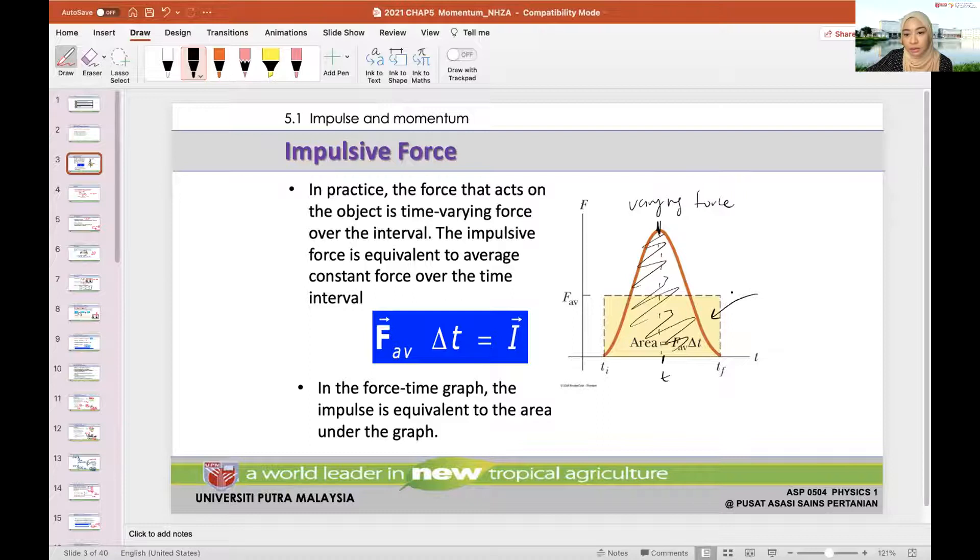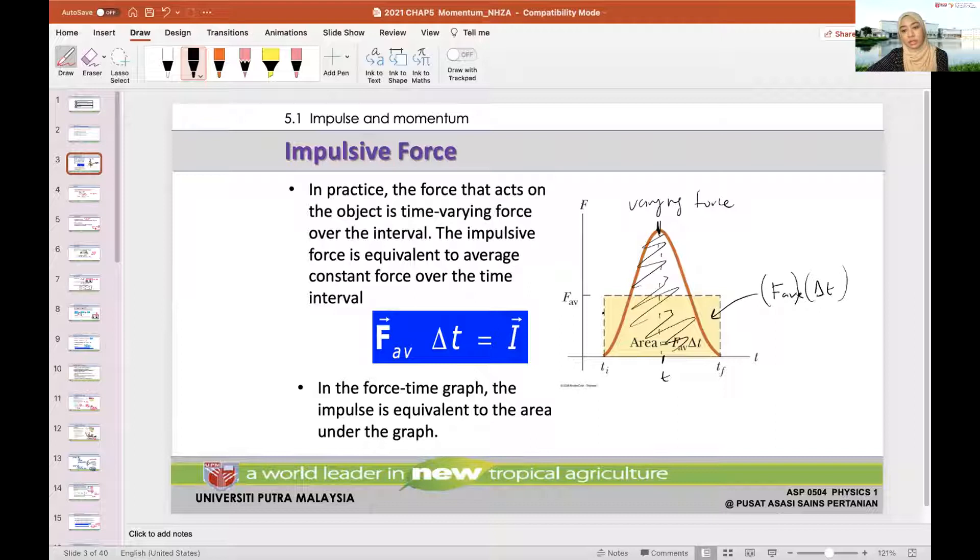So what they did was, let's approximate this area, this area of the peak, as the area of this rectangle. They call this rectangle the F average versus time. If we multiply or we find out the area, we want to find the height F average with the length T final minus T initial. This gives us F average times the length of time, and this one is actually equal to impulse.